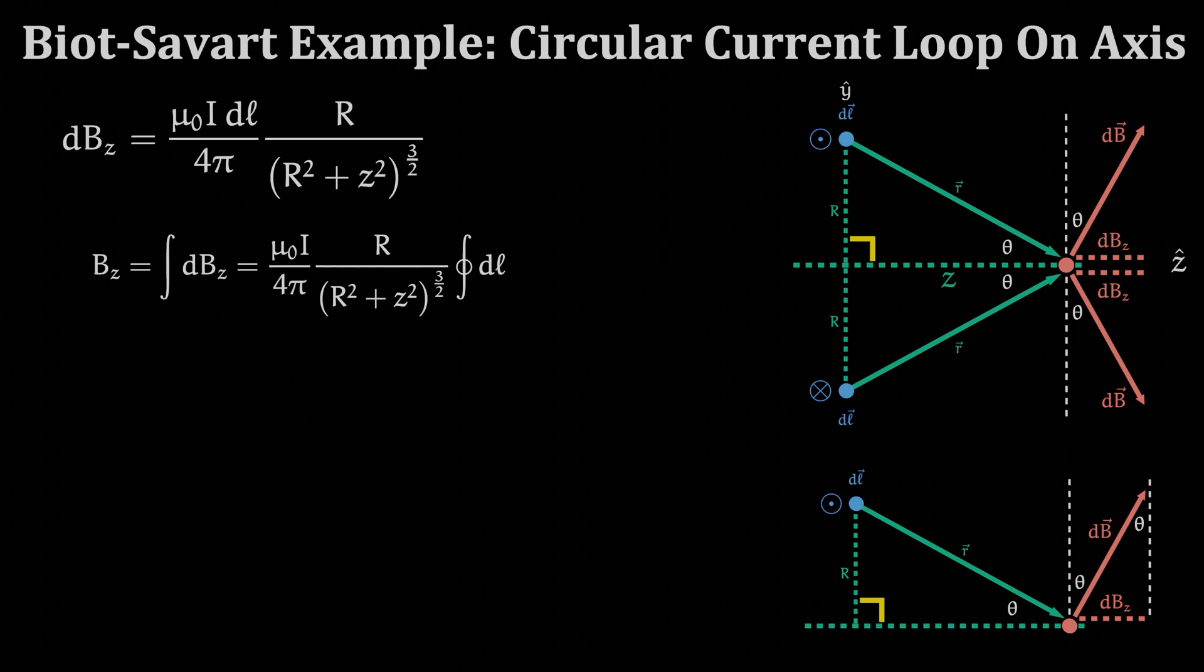This integral is really simple, all the integration is telling us to do is start at one point of the circular current loop, walk along the loop until we get back to where we started, and report how long that was. This is just a fancy way of saying the circumference of the circular current loop. After we simplify the answer we get this result.